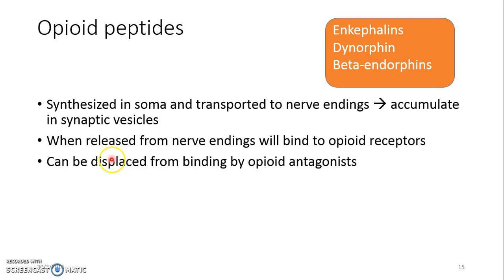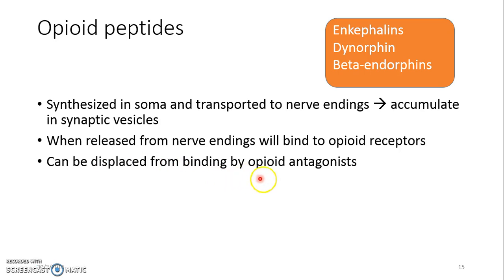In our body we have endogenous peptides such as the enkephalins, dynorphin, and beta-endorphins. These opiate peptides are synthesized in the soma and transported to the nerve endings, where they accumulate in synaptic vesicles. When released from the nerve endings, they bind to the opiate receptors, and they can be displaced from binding by opioid antagonists. These opioid peptides appear to control transmission at many sites in the brain, spinal cord, and in the primary efferents.